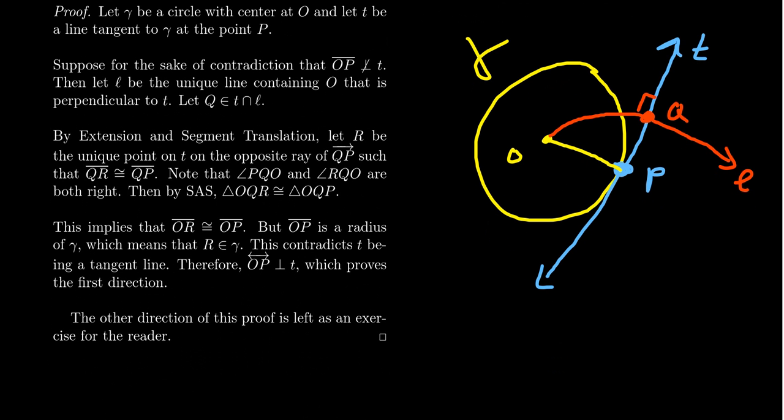Well, by the extension axiom and also by the segment translation axiom, there has to exist a point R. Well, we're going to let R be the unique point on T that's on the opposite ray of QP. So QP is the ray that's going this way. So there's going to be some point over here so that QR and QP are congruent to each other. So we have some point over here R so that the segment QR is congruent to QP like so.